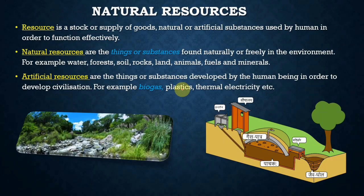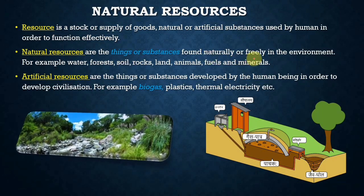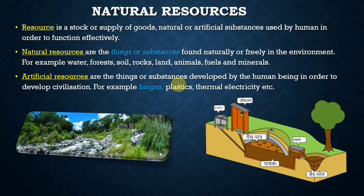A resource is a stock or supply of goods — natural or artificial — used by humans to function effectively. Natural resources are things or substances found naturally or freely in the environment, for example water, forest, soil, rocks, land, animals, and fuels. Artificial resources are things or substances developed by human beings to develop civilization, for example biogas, plastic, and thermal electricity.